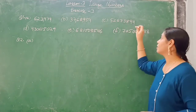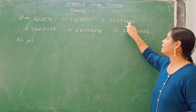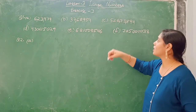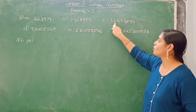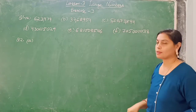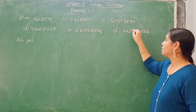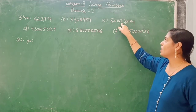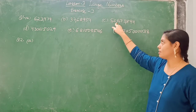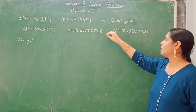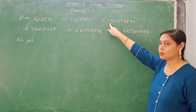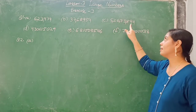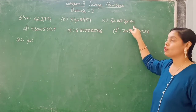Three numbers ke baad comma laga dena hai, then two numbers ke baad comma laga dena hai, then again two numbers ke baad comma laga dena hai. So ye ho gaya: ones period, thousands period, lakhs period. Toh ye kya hoga? 5,26,73,894.